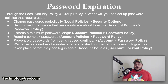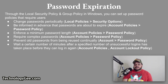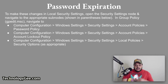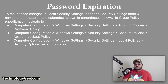You can also set a wait period after a specified number of unsuccessful login attempts before someone can try again, found in Account Policies under Account Lockout Policy. To make these settings in local security settings, open the Security Settings node and navigate to the appropriate sub-nodes. In group policy or gpedit.msc, navigate to Computer Configuration, Windows Settings, Security Settings, Account Policies, and Password Policy.